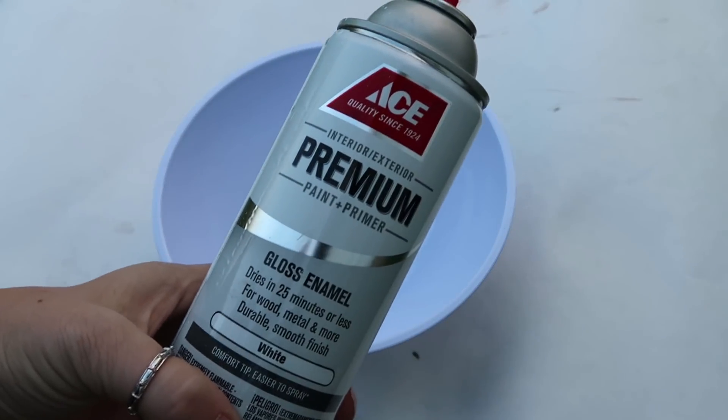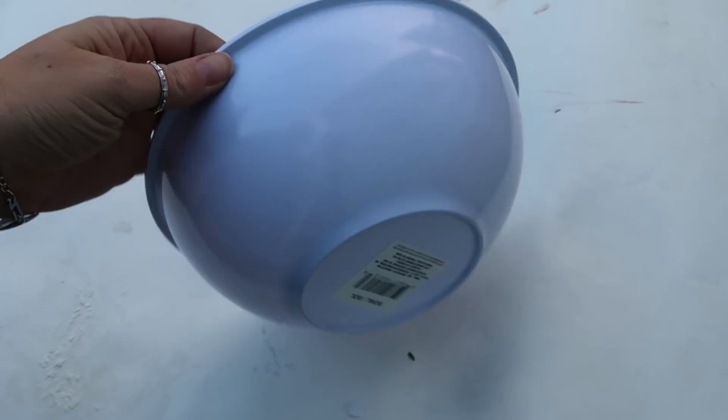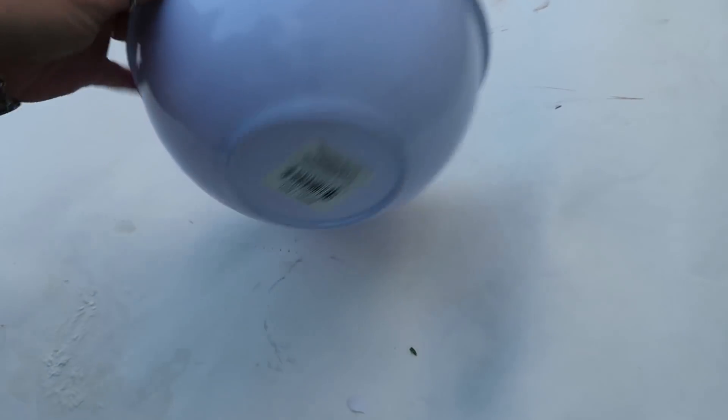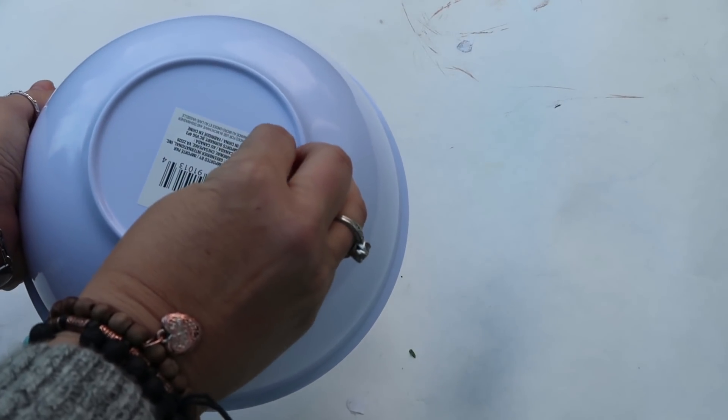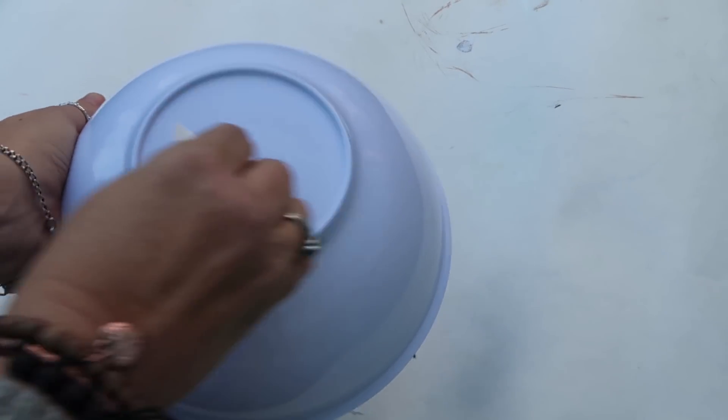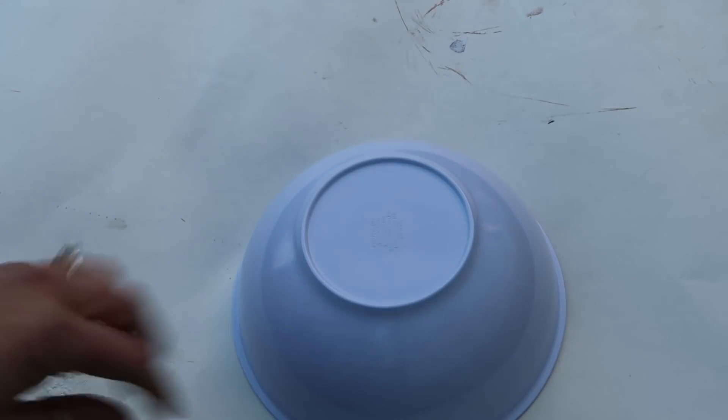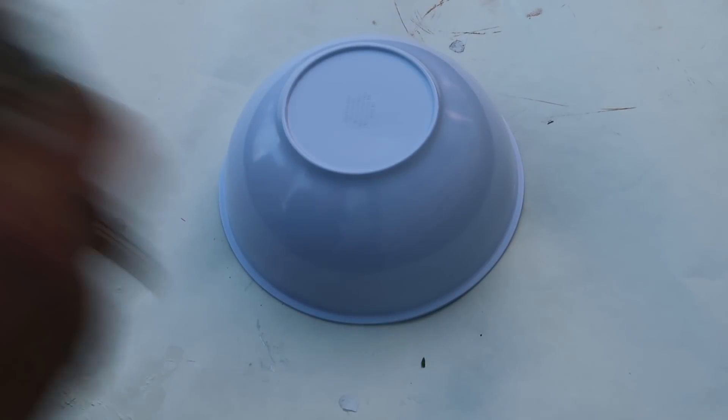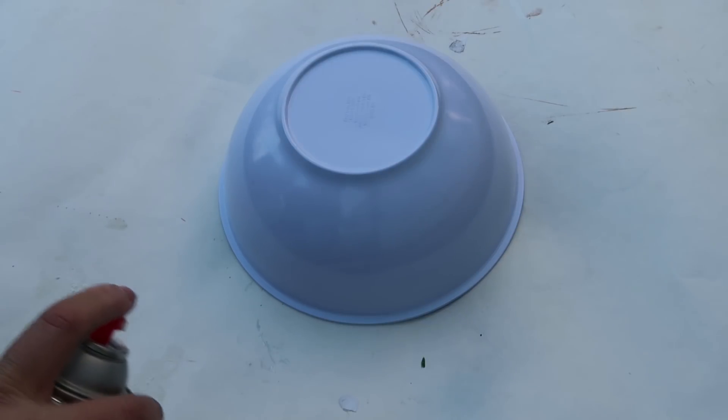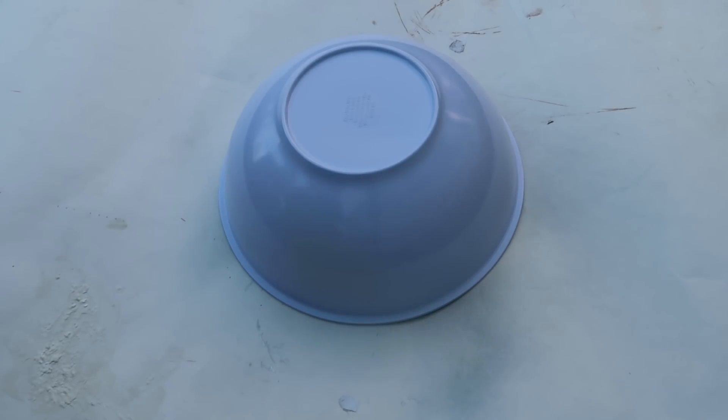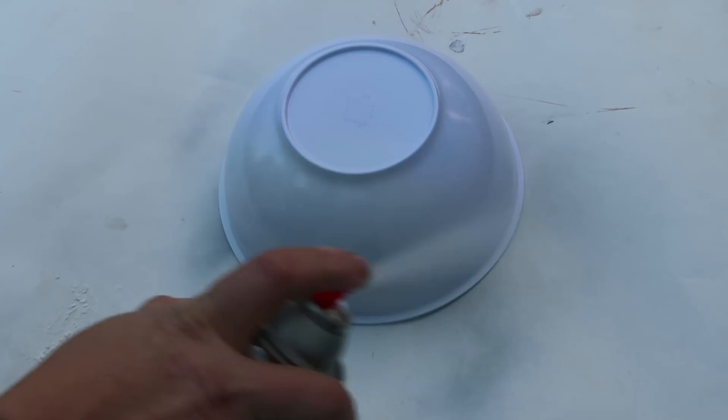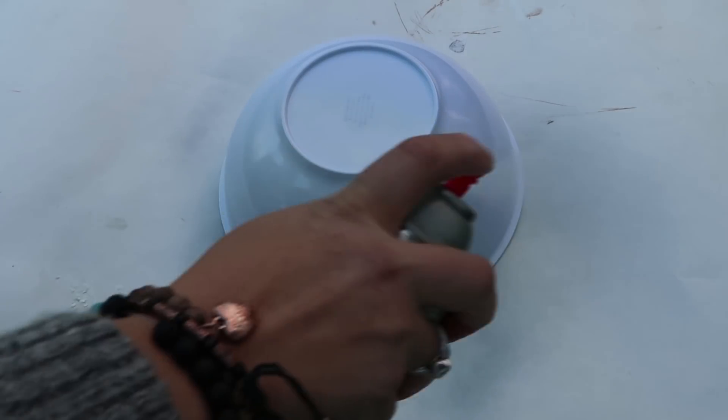For this next one, another super simple DIY, I am taking a bowl from the Dollar Tree and I am painting it white. You're gonna think I'm crazy but I wanted it to be more of a shiny white because I wanted it to look like the enamel finish bowls. So I went with a high gloss white and just coated it really well.